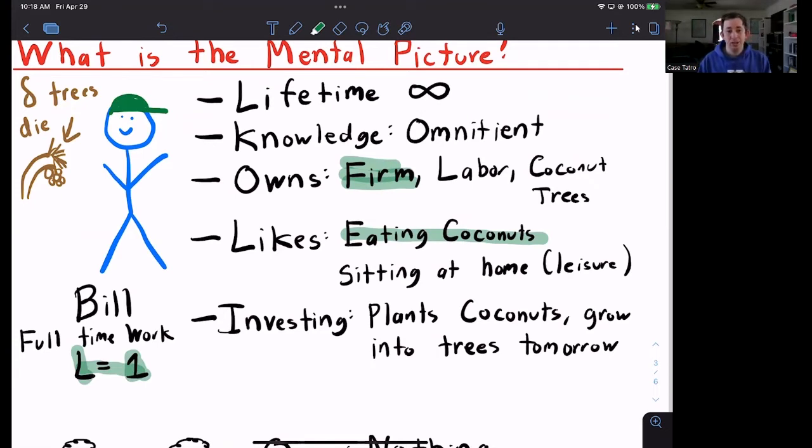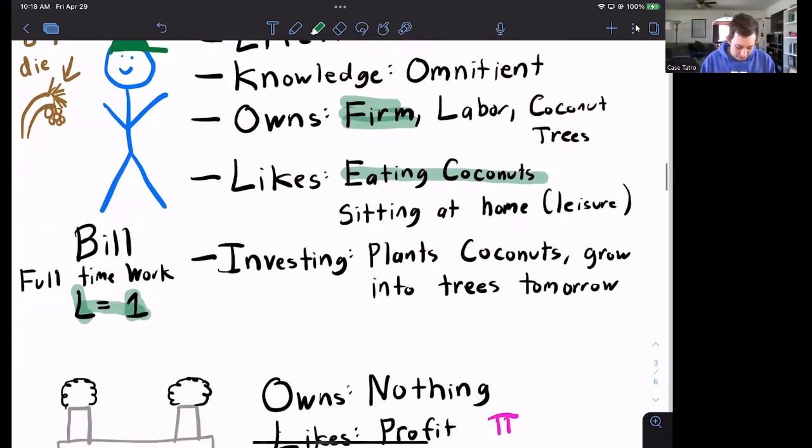Now for investing, notice we don't have savings in this model. The only way for Bill to take some wealth that he gets today and turn it into wealth tomorrow is to invest in himself. What does he invest in specifically? He owns the coconut trees. So Bill can take some of those coconuts, he can plant them, and those coconuts will become coconut trees tomorrow. That act of planting coconuts for more coconut trees tomorrow is what we call investment. So Bill now has investment, but doesn't have savings.